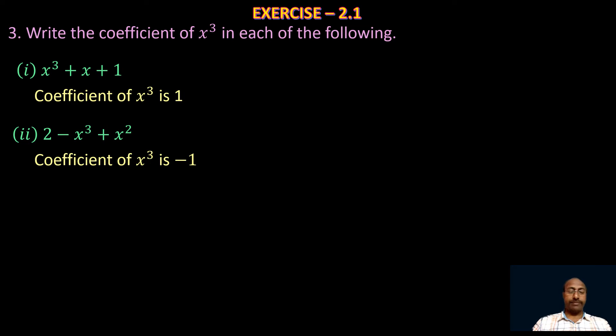Take the third one: √2·x³ + 5. Here x³ is multiplied by √2, so the coefficient of x³ is √2.